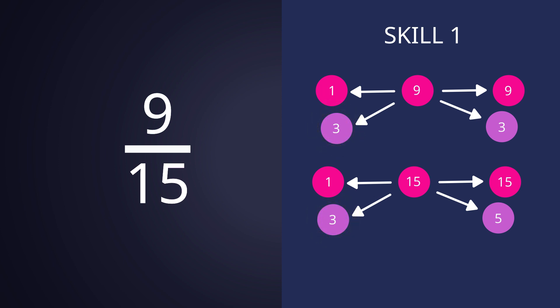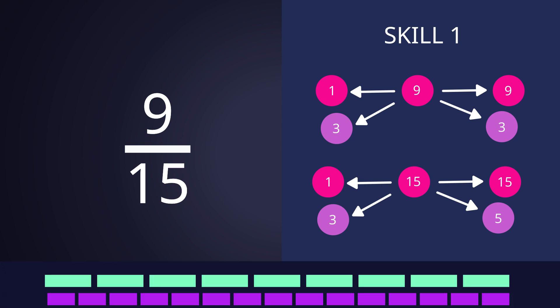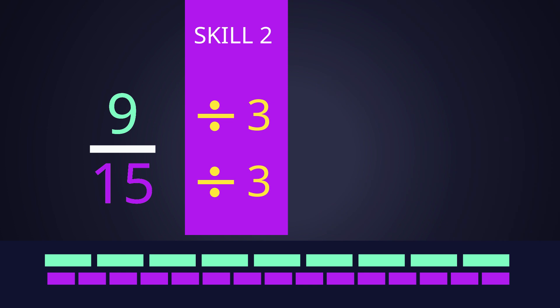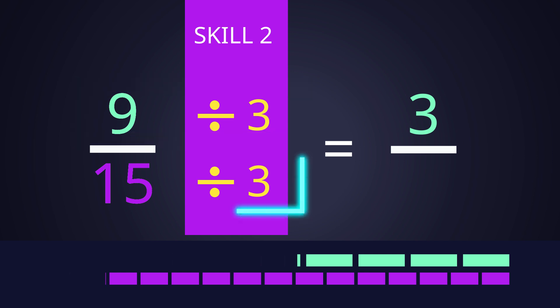Moving on to Magic Math Skill 2: The Simplification Spell. With your Highest Common Factor, it's time to cast your spell. Wave your wand and whisper the magic words. Simplify! Both the top and bottom of the fraction will now divide by the Highest Common Factor. 9 divided by 3 is 3, and 15 divided by 3 is 5. So 9/15 simplifies to 3/5.